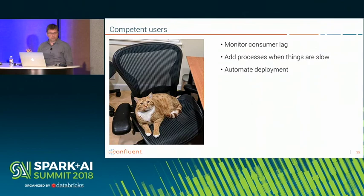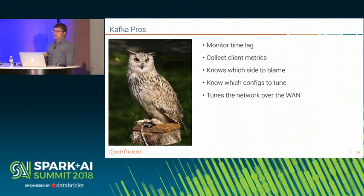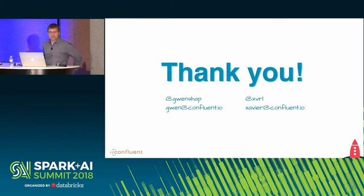As a final recap: competent users monitor consumer lag, add processes when things are slow, and automate their deployments. The real pros not only look at consumer lag but also monitor time lag, collect client metrics, and based on all this, they know which side to blame, which configs to tune, and can pinpoint whether the problem is on the source side or the destination side. If you have more questions, there are additional resources on Kafka on our website, including a demo showing all the different pieces. Thank you!